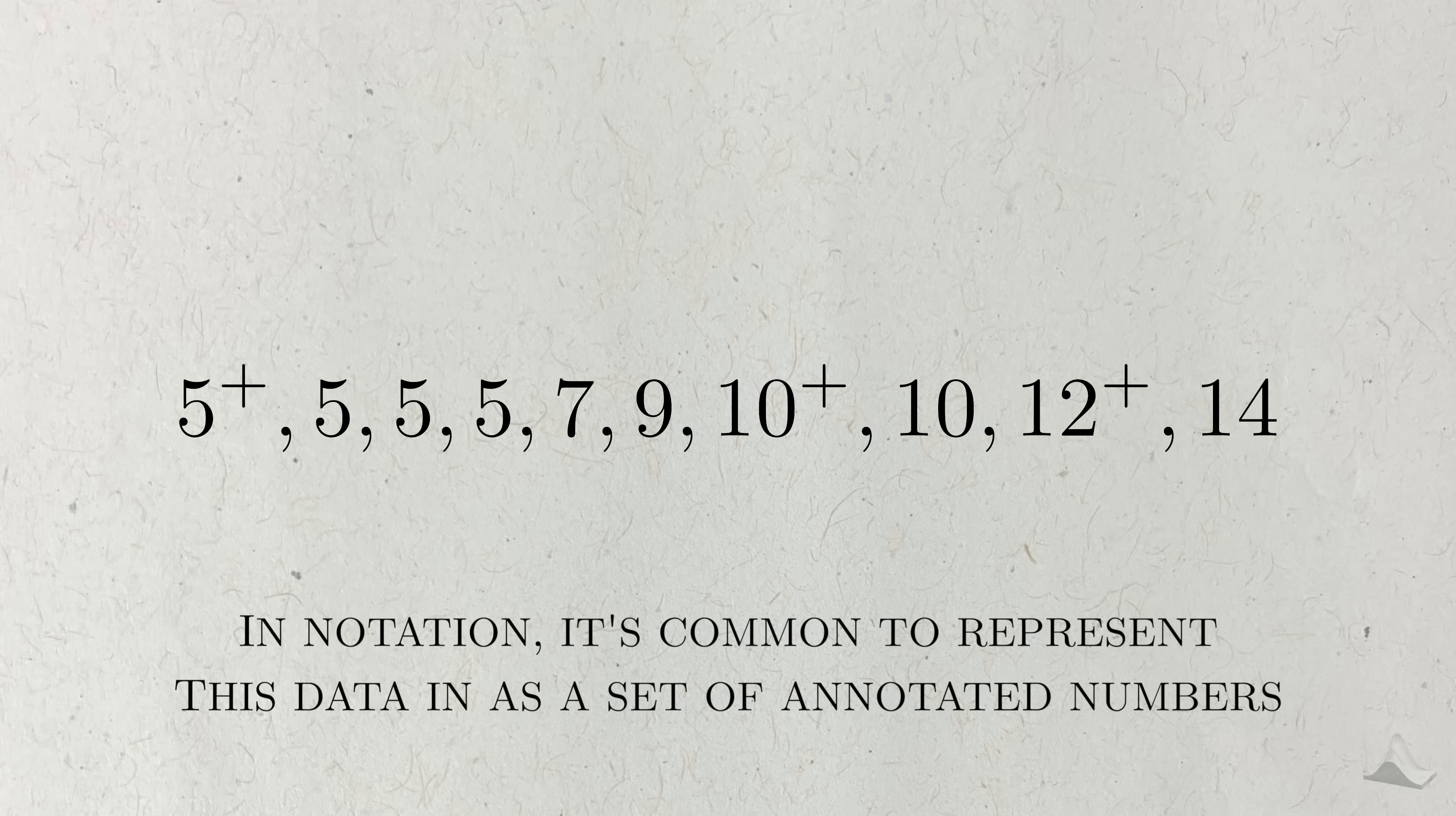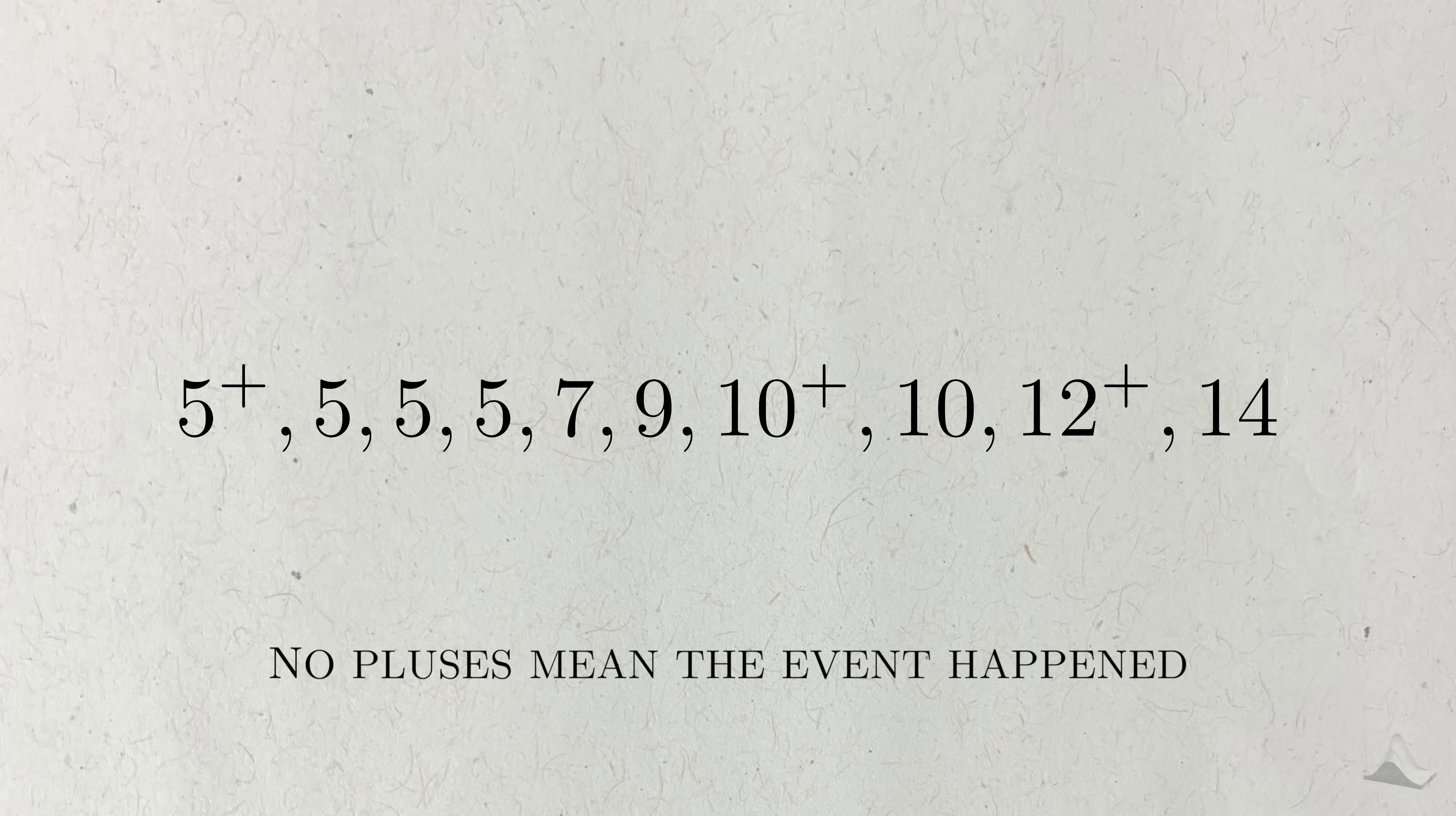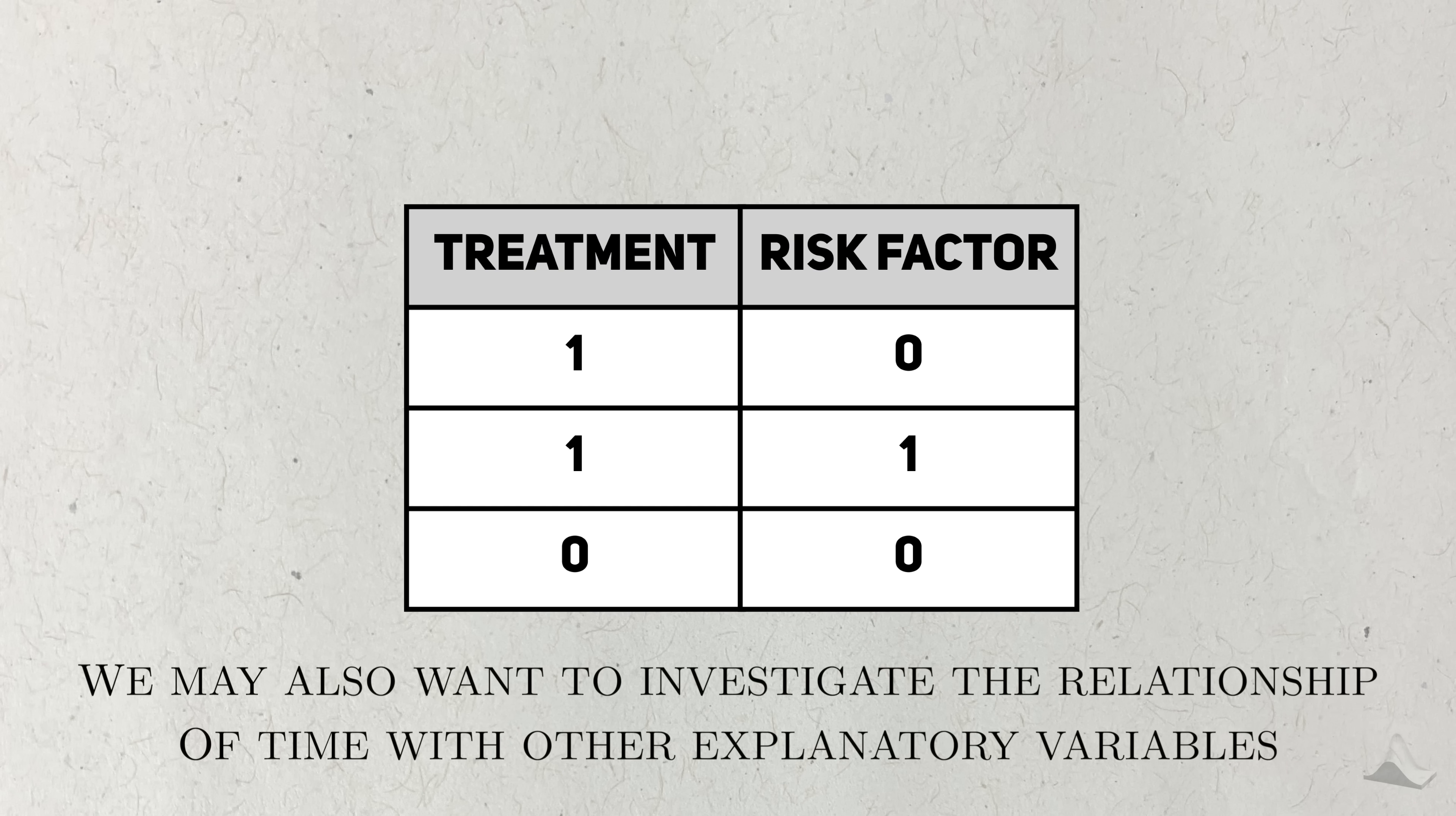We can also summarize it in the form of a vector. These pluses here indicate that someone was censored at this particular point. No pluses means they experienced the event. In addition to these three core variables, there may or may not be explanatory variables that we want to include to investigate the relationship with the time variable. In clinical trials, this could be a treatment, but in observational studies, this could be an environmental or a genetic factor.